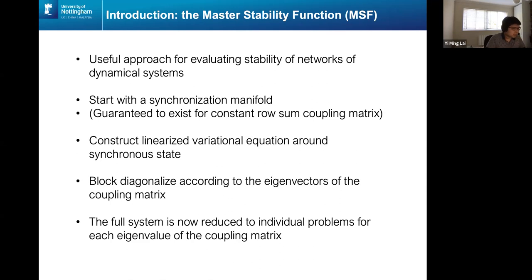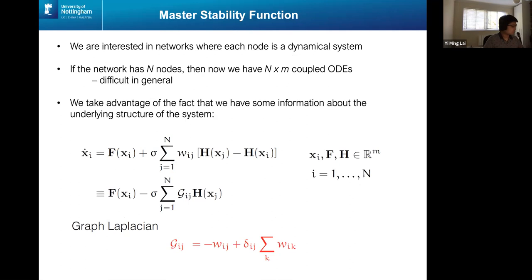Now it's, this is a talk about a network dynamical system. So I'm going to assume that everyone is reasonably familiar with some of the things I'm talking about. And I apologize in advance if I skip over too many things. So what it is, is that it's a useful approach for looking at the stability of networks of dynamical systems. You start with your synchronization manifold, which if your network is balanced, is guaranteed to exist. Then you have a variational equation. So with the stability, linear stability analysis around your synchronization manifold. And then the trick is that you block diagonalize it according to the eigenvectors of the network coupling matrix. And now you then you're able to sort of decouple the system and reduce it to individual problems.